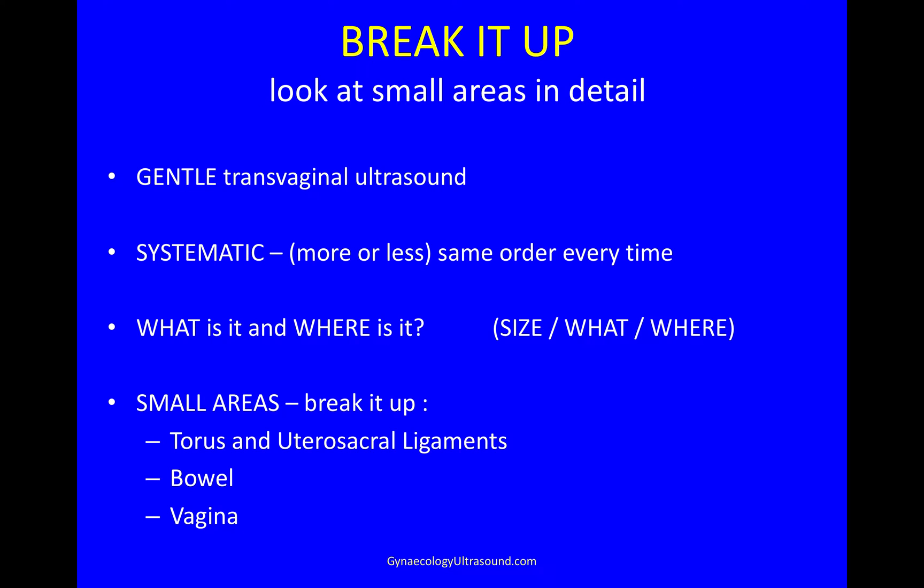When it's complicated, as this case is, I break it up and look at small areas in detail before sweeping all the way through and putting all the information together. Always remember to be really gentle with your transvaginal ultrasound and be systematic — more or less the same order every time, then you won't forget anything. When you find something, think: what is it and where is it? I go through small areas and I break it up into torus and utero-sacral ligaments, bowel and vagina.